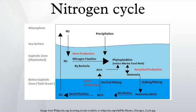Nitrogen is necessary for all known forms of life on Earth. It is a component in all amino acids as incorporated into proteins, and is present in the bases that make up nucleic acids such as RNA and DNA. In plants, much of the nitrogen is used in chlorophyll molecules, which are essential for photosynthesis and further growth.